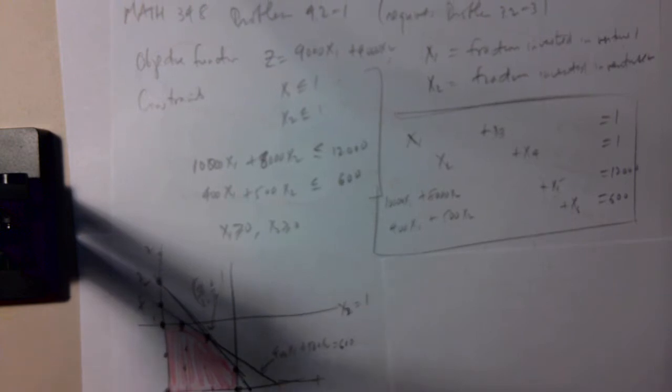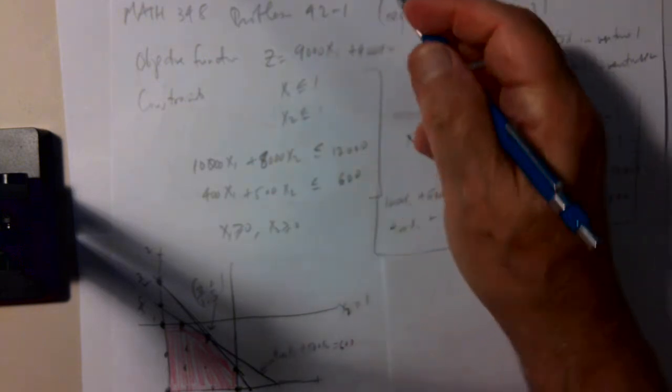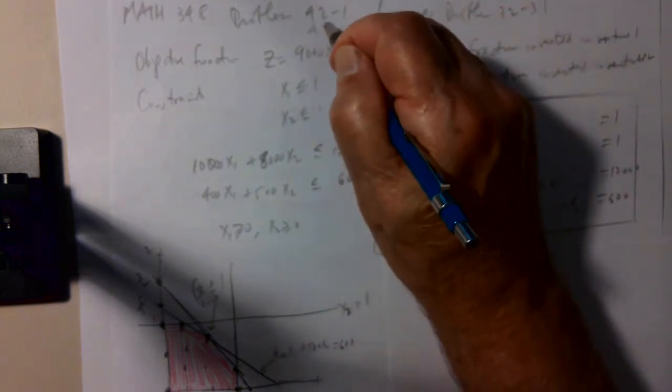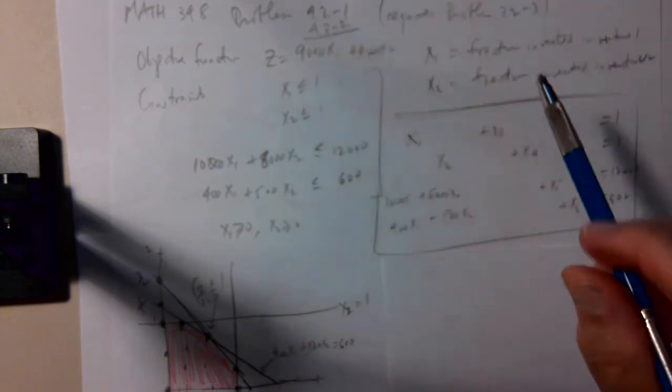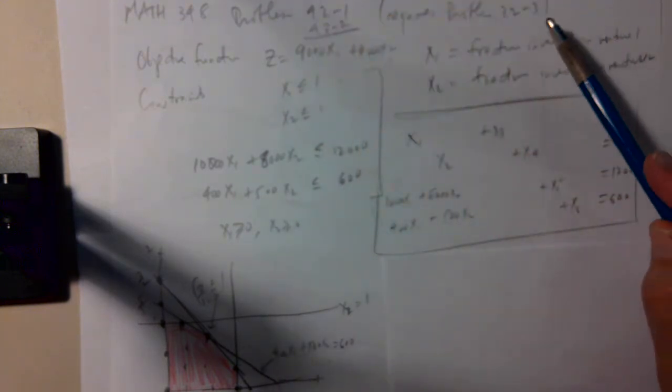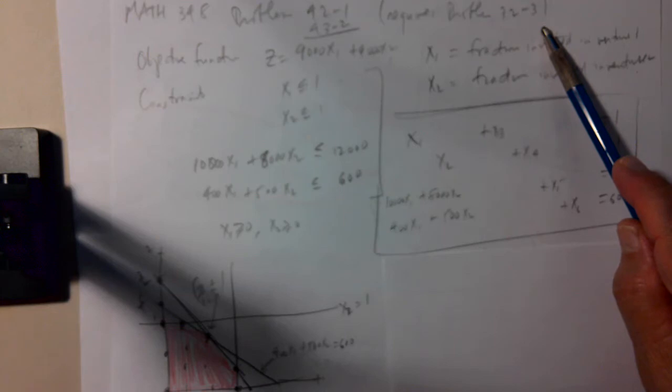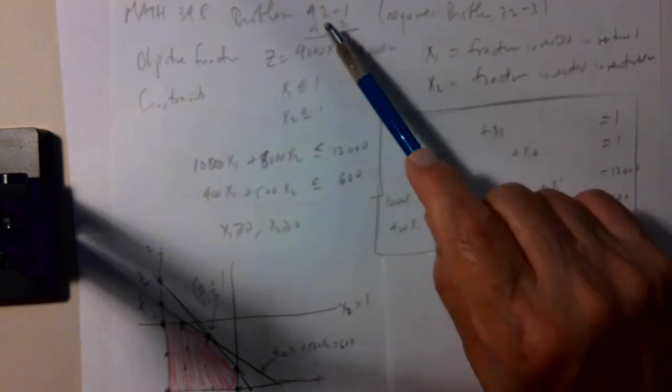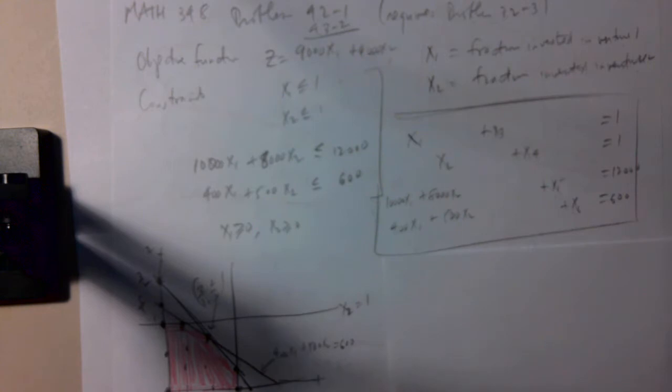So I'm going to start with problems 4.21 and 4.32. So there was problem 3.23, which is used in 4.21, which is used in 4.32, and which is also used in 4.41. Let's just start with this.